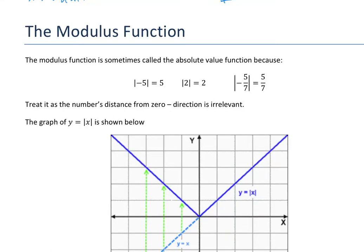In this video we're going to look at the modulus function. The modulus function is sometimes called the absolute value function. These vertical lines beside something — for example, the modulus of minus 5 is equal to 5. You're just looking at the size of minus 5, and the size of minus 5 doesn't matter about the minus — it's just 5.